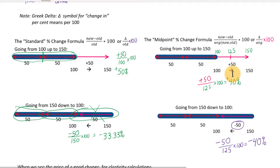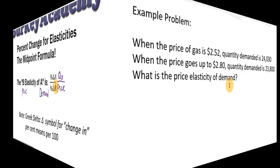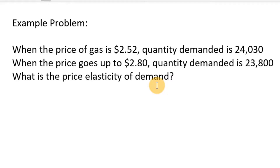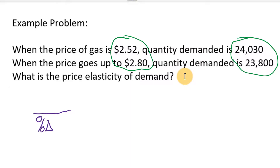Anytime you're calculating an elasticity, you'll need to calculate two percentage changes and then take the ratio of one by the other — that gives the elasticity. For any elasticity problem you need two prices and two quantities, or two incomes for income elasticity of demand. Here we have two prices and two quantities — real-world numbers looking at a change in price and how it affects quantity demanded of gasoline. Use these numbers to calculate percent change in price and percent change in quantity, then divide. Price elasticity of demand: price goes in the denominator, quantity demanded goes in the numerator.